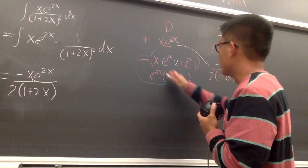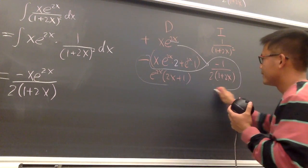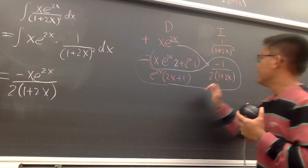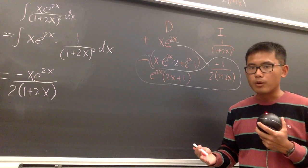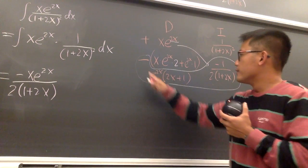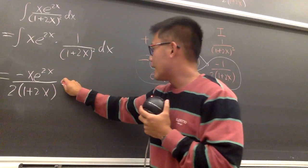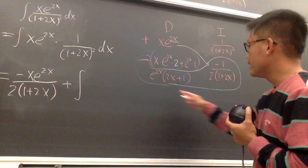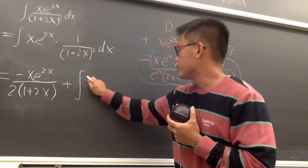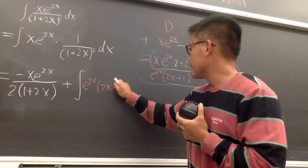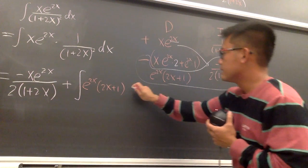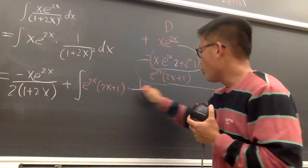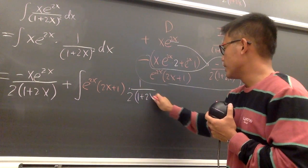Remember, the product of each row — I'll take the product for the second row. Because here we can factor out the e to the 2x, this is negative e to the 2x times 2x plus 1, multiplied with negative 1 over 2 times 1 plus 2x. That's the product of the second row, which is still an integral. Notice we have negative times negative, so we get a plus. We have another integral: the product gives us e to the 2x times 2x plus 1 times 1 over 2 times 1 plus 2x.